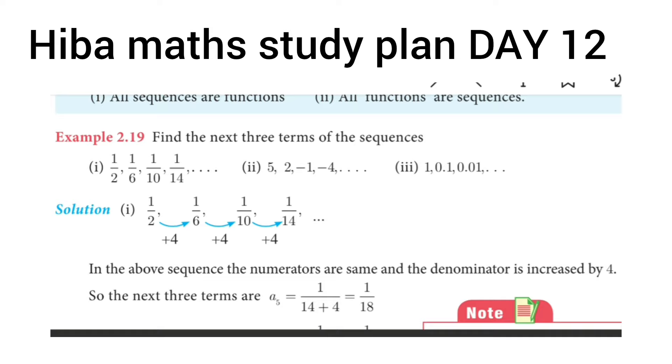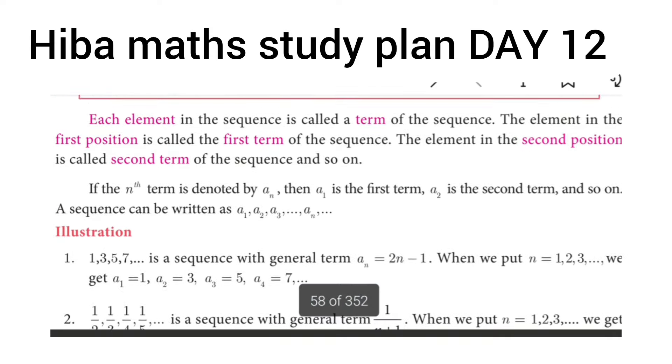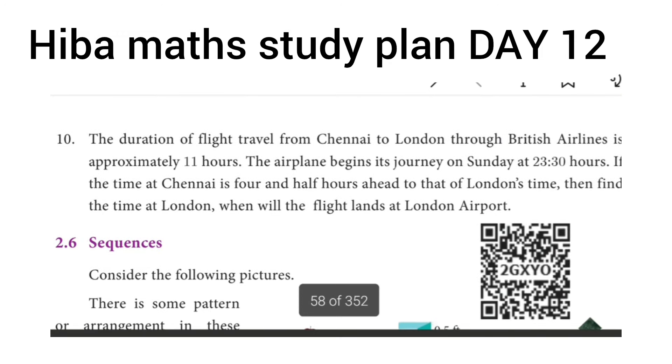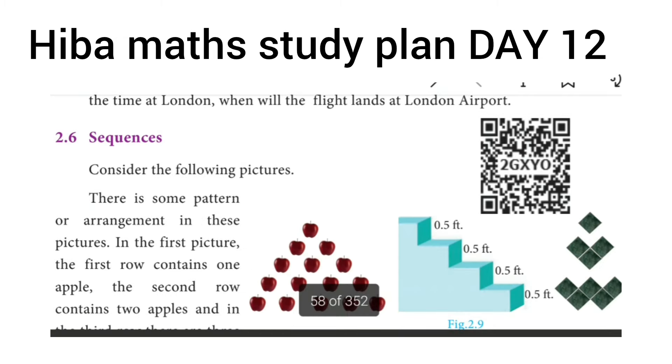In the video, I missed a question in day 11. The 10th question is the duration of flight travel from Chennai to London. I missed that question, so you can complete it. And let's see the sequences in this video.